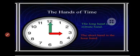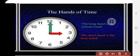The long hand is the minute hand and the short hand is the hour hand. At present the short hand is at 3 and the longer hand is at 12, so it is 3 o'clock. If the short hand is at 4 and the long hand is at 12, then it is 4 o'clock.